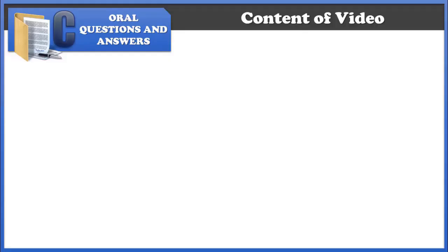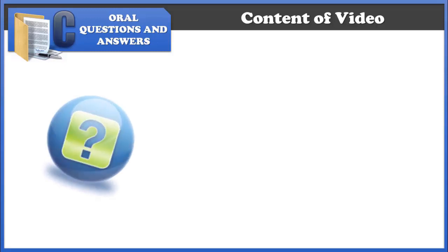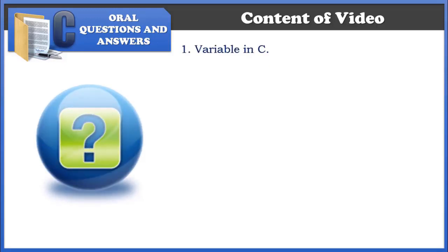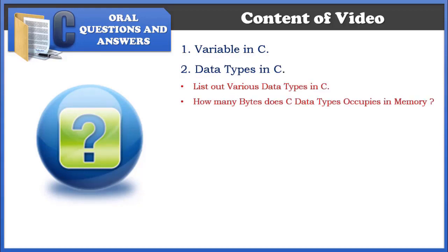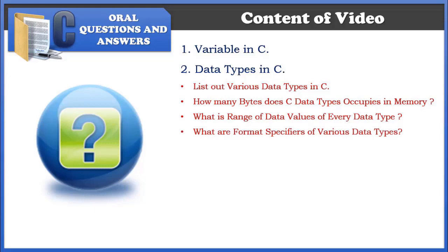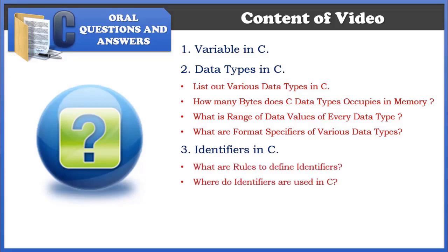In this introduction part we will discuss about what are variables in C, what are different data types in C, how many bytes they occupy in memory, what are the range of data values of every data type, and what are the different format specifiers used in input and output statements. Next we'll see identifiers in C, rules for identifiers, and where exactly we use identifiers in C language.